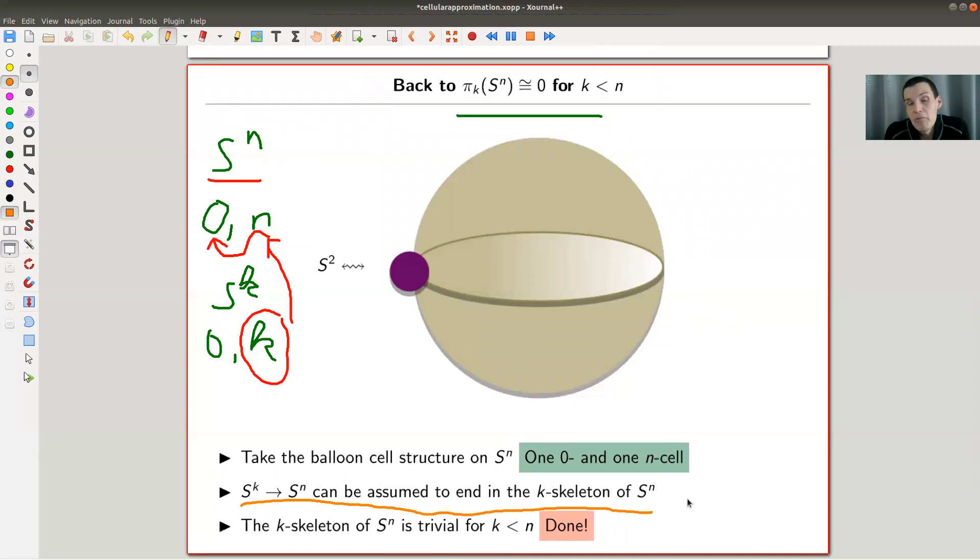Because now we just proved, using the cellular approximation, that all S^k's in S^n are trivial, because their k-skeleton has to end up—has to end, up to homotopy, completely in the k-skeleton. Bonkers. Really crazy statement. Bonkers.